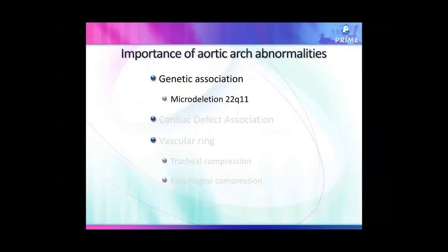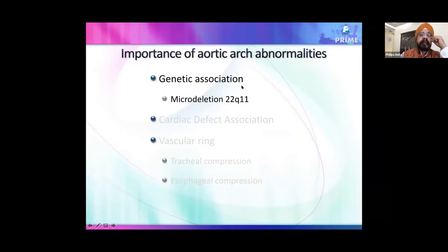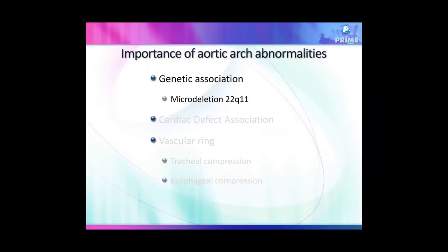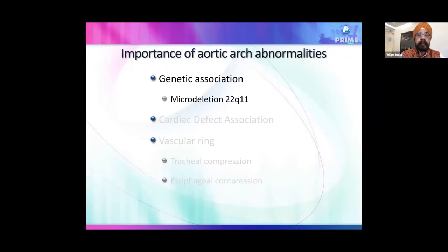Right-sided aortic arch is mostly benign, but the problem is its genetic association — it is commonly associated with DiGeorge syndrome (22q11 microdeletion). A pure isolated right-sided aortic arch won't cause problems to the fetus, neonate, or adult unless associated with other defects. However, you must suspect microdeletion: confirm with genetic testing and assess thymus — a small thymus supports the diagnosis.